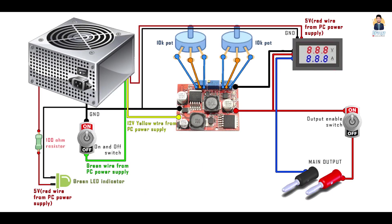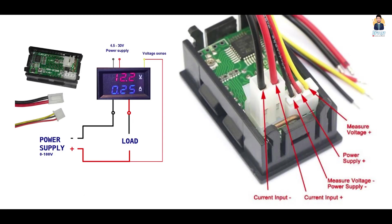Notice the use of 12V rail as input to the converter. Also take note on how the 10K pots and the display is connected to the buck boost converter. And this is the diagram to connect the volt amp meter.